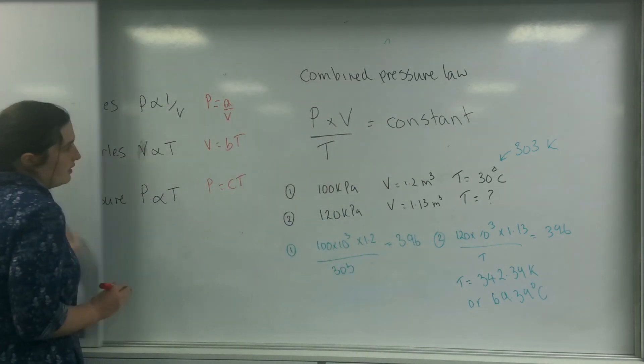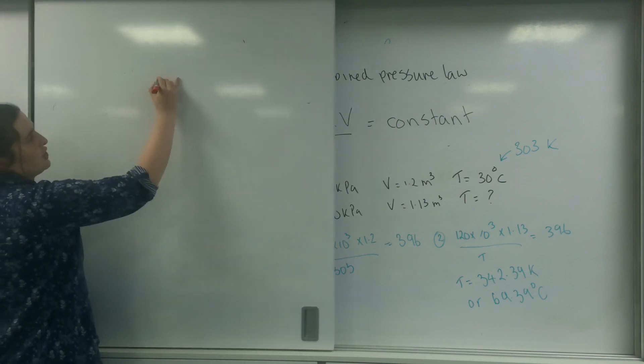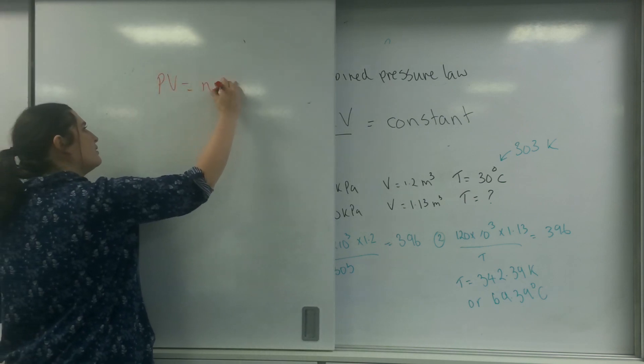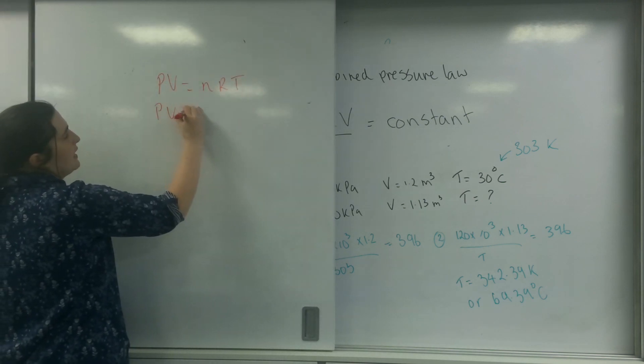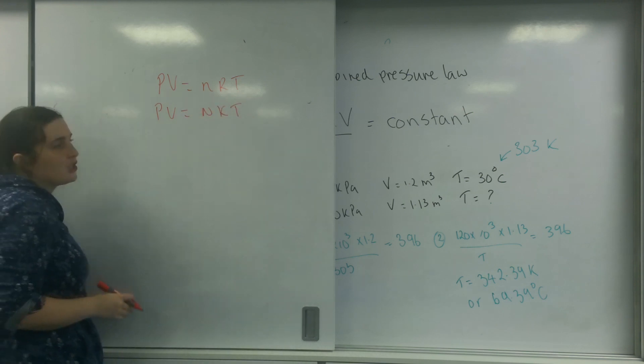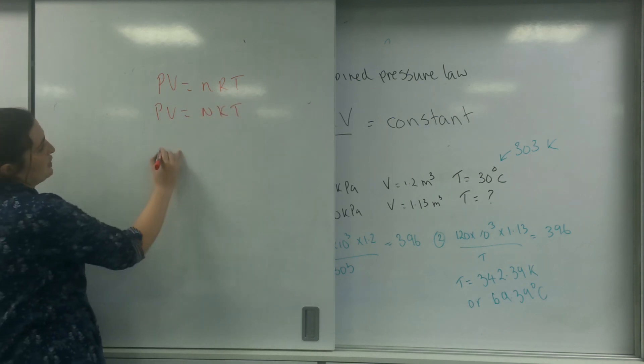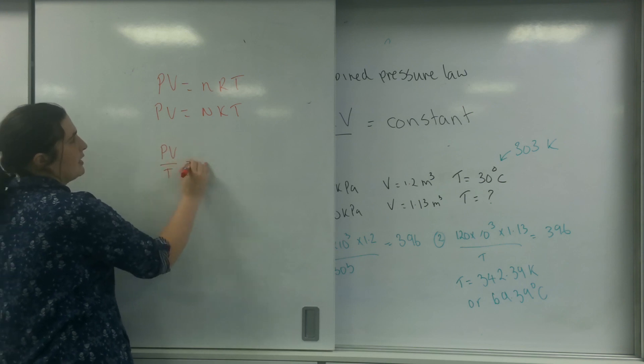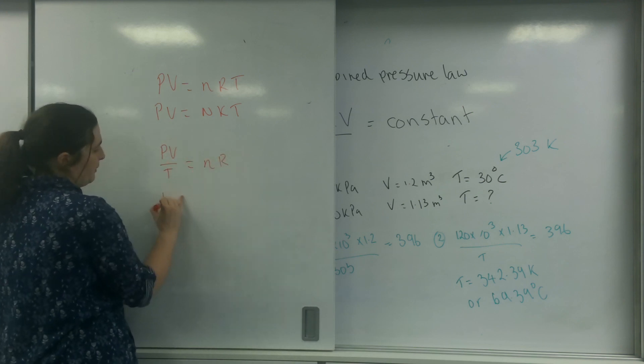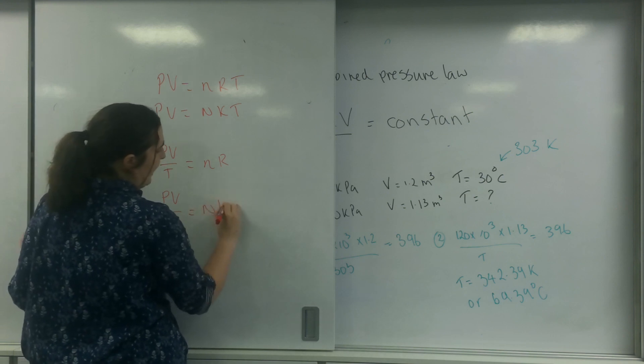However, these two are. The two that are on your datasheet are PV equals nRT or PV equals nKT. They're both on your datasheet. And if I just rearrange these, I end up with PV over T equals nR, or PV over T equals big NK.